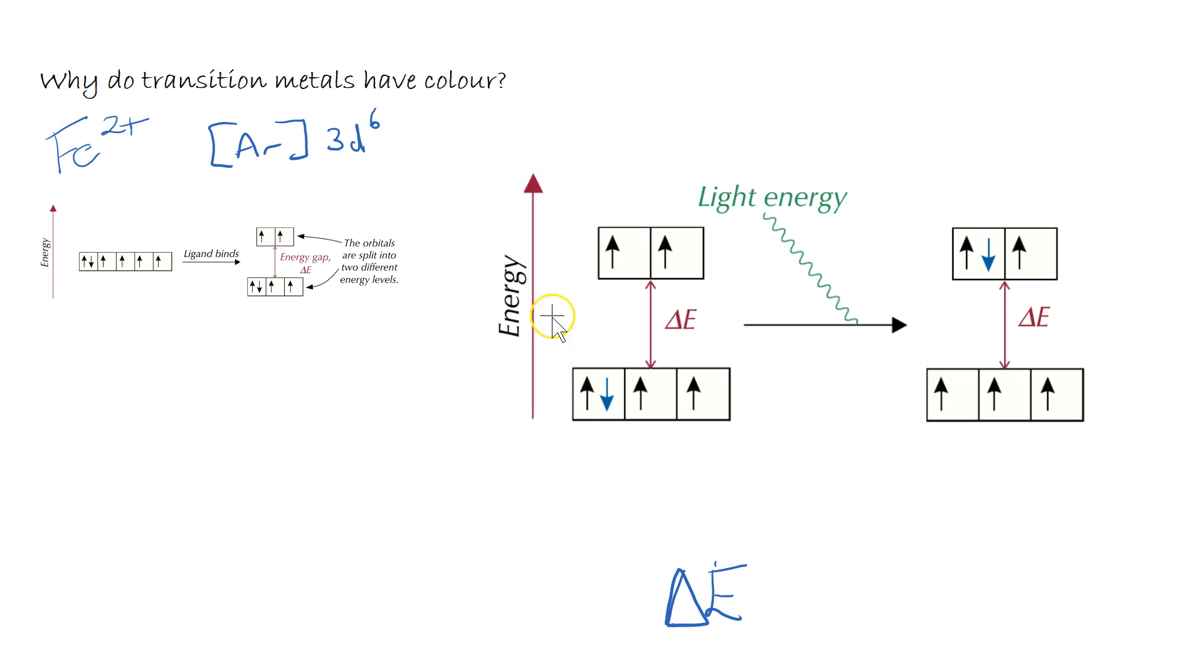In itself this doesn't cause the substance to have any particular colour. It's when we're now looking at a picture of these three d orbitals again, when light energy is absorbed on this molecule, the electron here, it doesn't actually matter which one, can jump up an energy level. Now the process of it jumping up an energy level is it absorbs energy equivalent to the energy gap delta E.